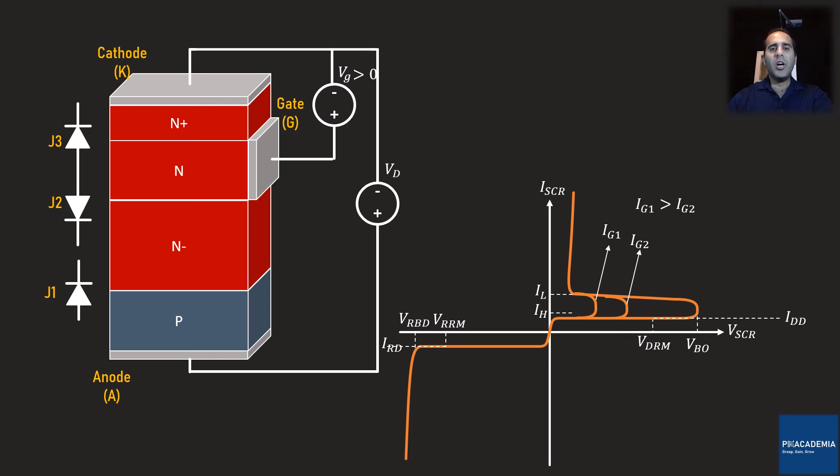Now let's look at the IV diagram to see what difference we can find. A positive Vg applied between the gate and cathode makes the J3 junction to be forward biased and therefore Ig flows to the junction J3. A bigger Ig can turn on the thyristor at a lower forward voltage. Unlike a BJT, once the thyristor turns on by the gate, there is no need to keep the gate driven. As long as the thyristor is forwardly biased and its current is more than the holding current, it remains in the on state.